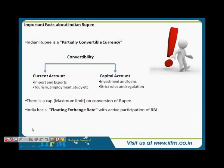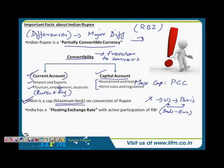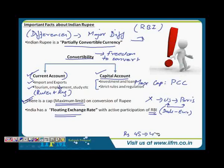One more important thing is that India has a floating exchange rate with active participation of RBI. The most important thing is it has a floating exchange rate, but RBI intervenes when needed. A floating exchange rate means that, for example, if the rupee is trading today at 45 rupees per dollar, the next day it might be 45.10, 45.20, or 46 — the value of the rupee keeps fluctuating depending upon demand and supply in the market.